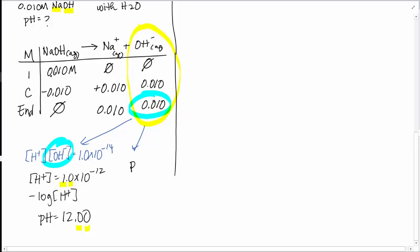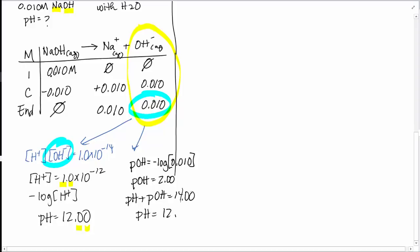Another way is to solve for the pOH, which is the negative log of OH⁻. So, negative log of 0.010 gives a pOH of 2.00. Since pH + pOH = 14, the pH = 12.00 — the same answer. Either approach works; use whichever you prefer. So that's the strong base.